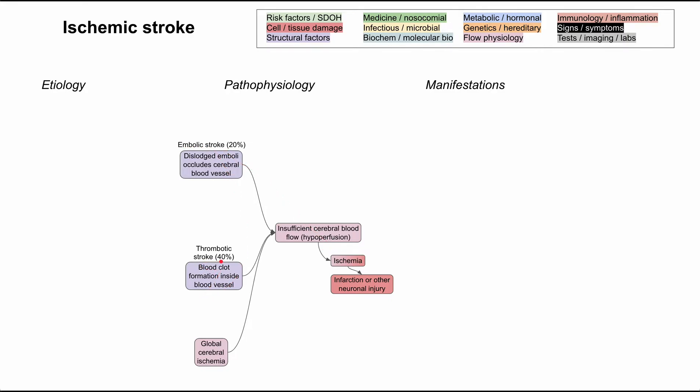Next, there's thrombotic strokes. A thrombus is an occlusion that differs from an embolism in that a thrombus is stationary. It's fixed to the wall. So a thrombotic stroke is when a blood clot forms inside the blood vessel. And that makes up about 40% of ischemic strokes. Lastly, you can have global cerebral ischemia. This is like when you have low blood flow going to the brain through all the vessels. There's not one focal occlusion. All of the brain is getting less oxygen than it should, less blood than it should.